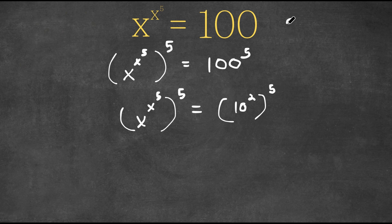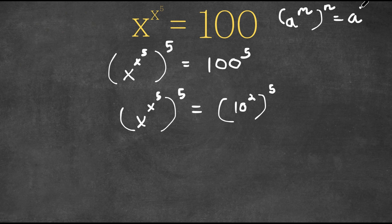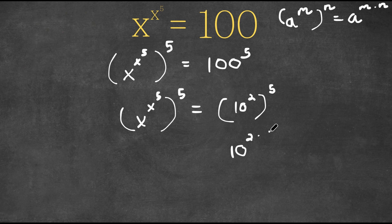Now if I have something in the form a to the power of m to the power of n, this is equal to a to the power of m times n. So 10 to the power of 2 to the power of 5 equals 10 to the power of 2 times 5, and 2 times 5 is simply 10, so this equals 10 to the power of 10.